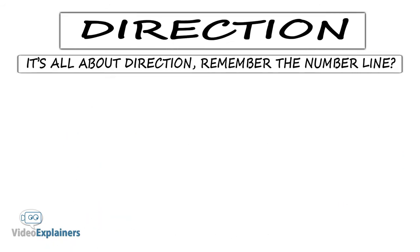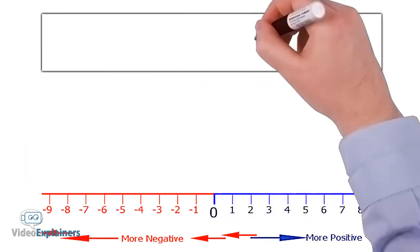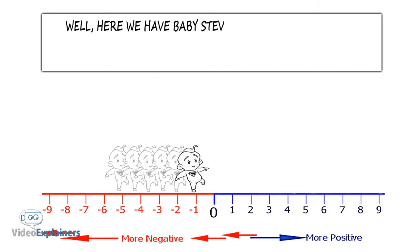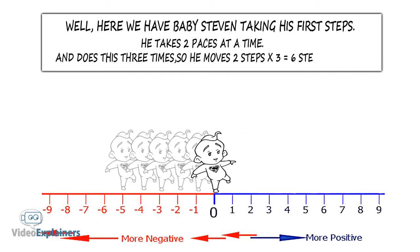It is all about direction. Remember the number line? Well, here we have baby Steven taking his first steps. He takes two paces at a time and does this three times. So he moves two steps times three equals six steps forward.